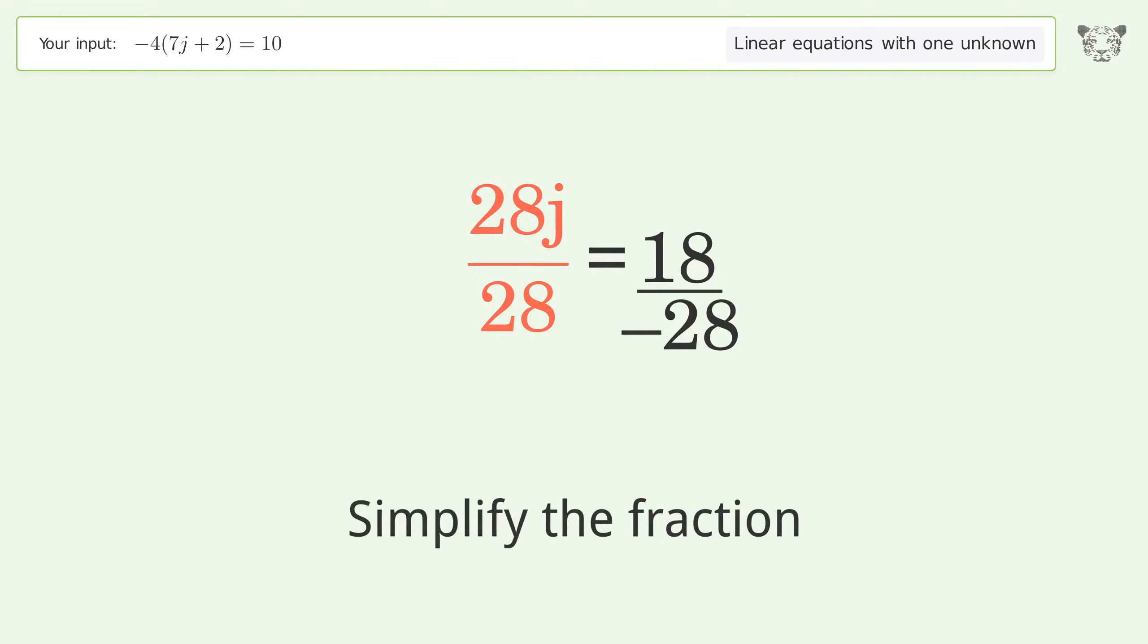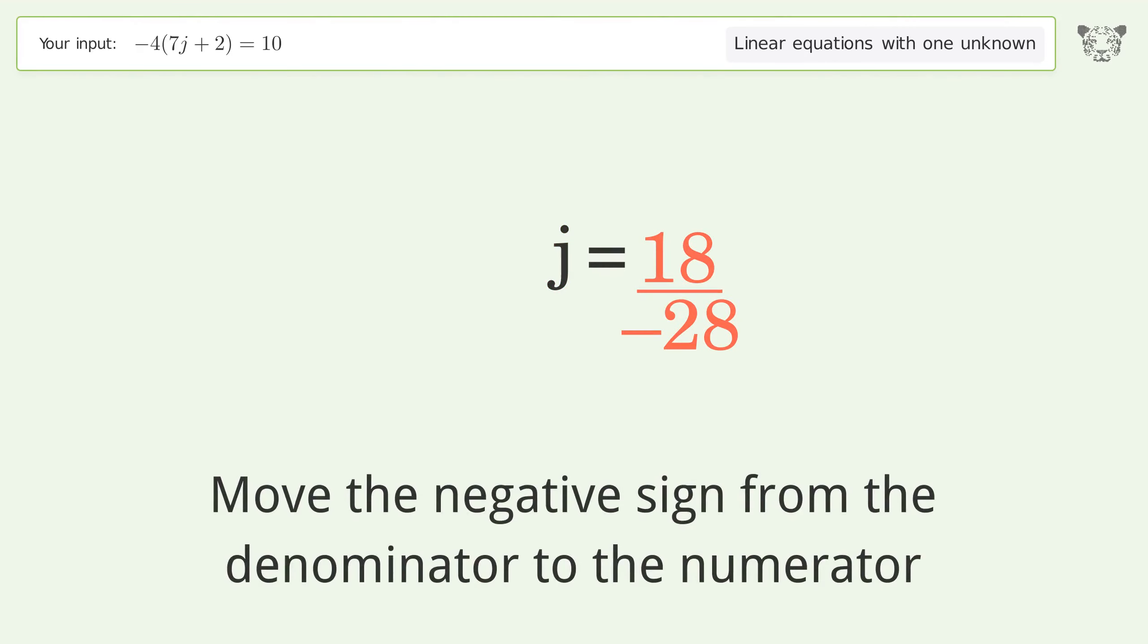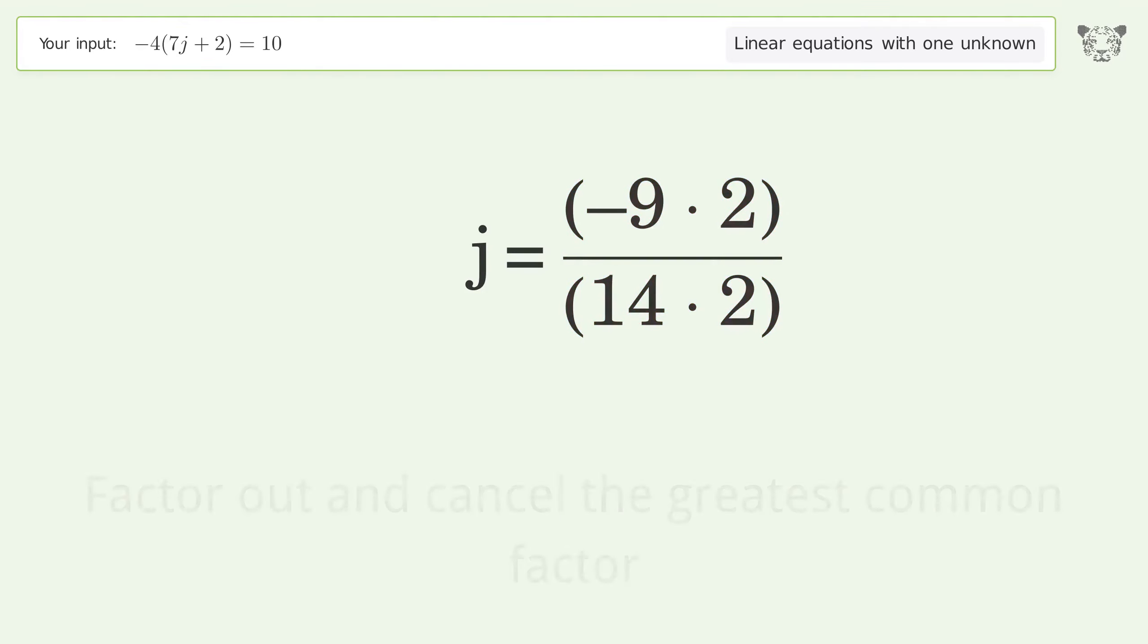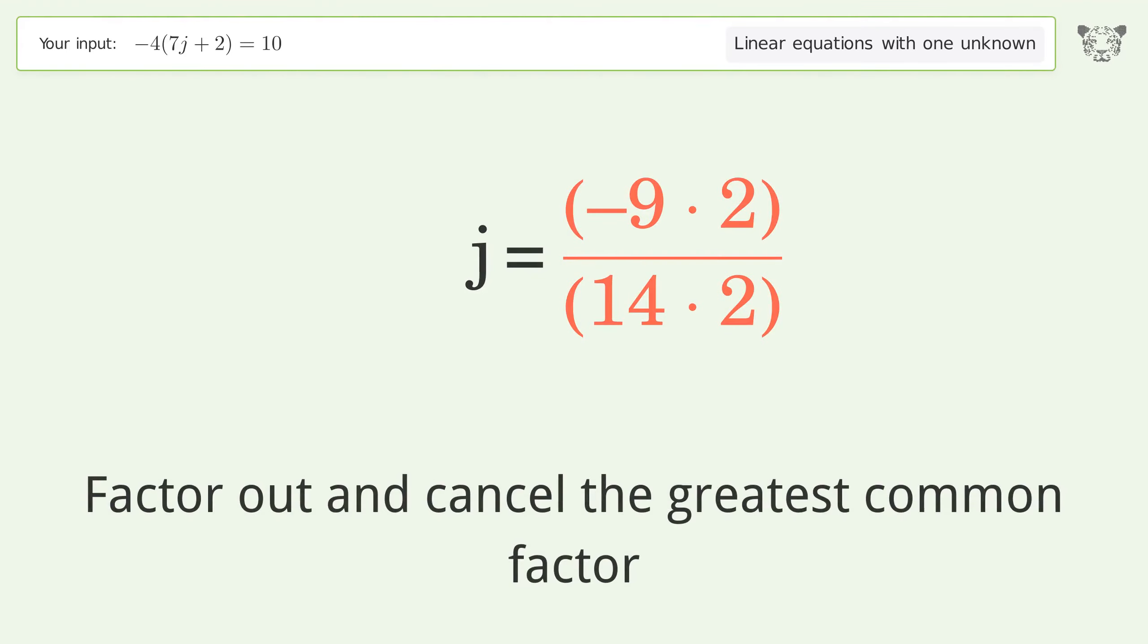Simplify the fraction. Move the negative sign from the denominator to the numerator. Find the greatest common factor of the numerator and denominator, then factor out and cancel the greatest common factor.